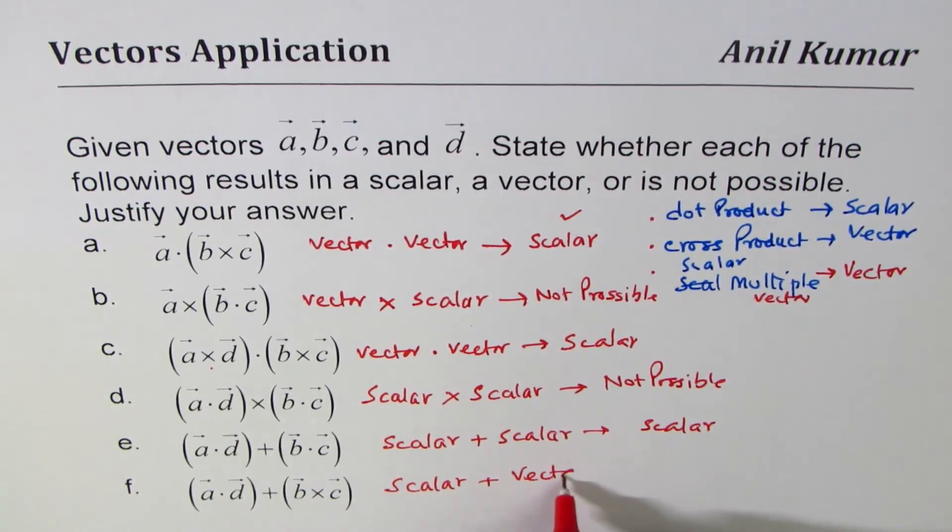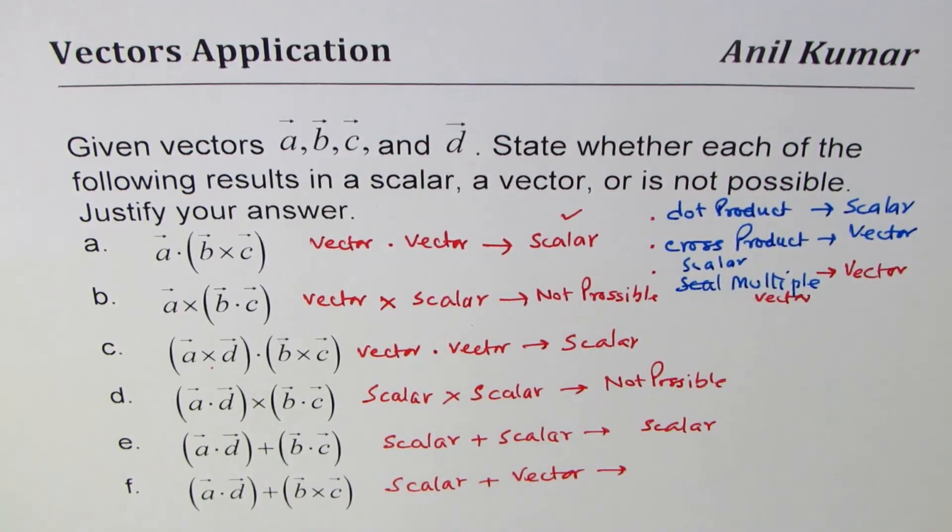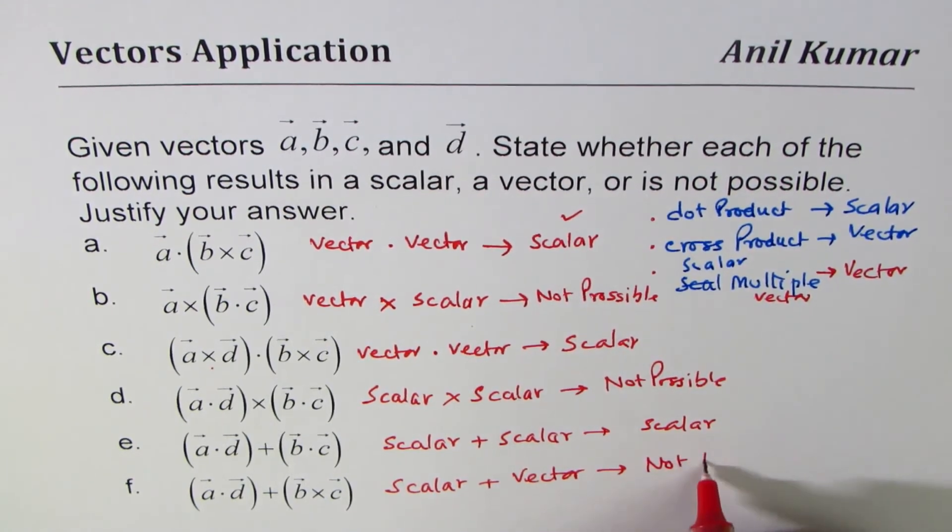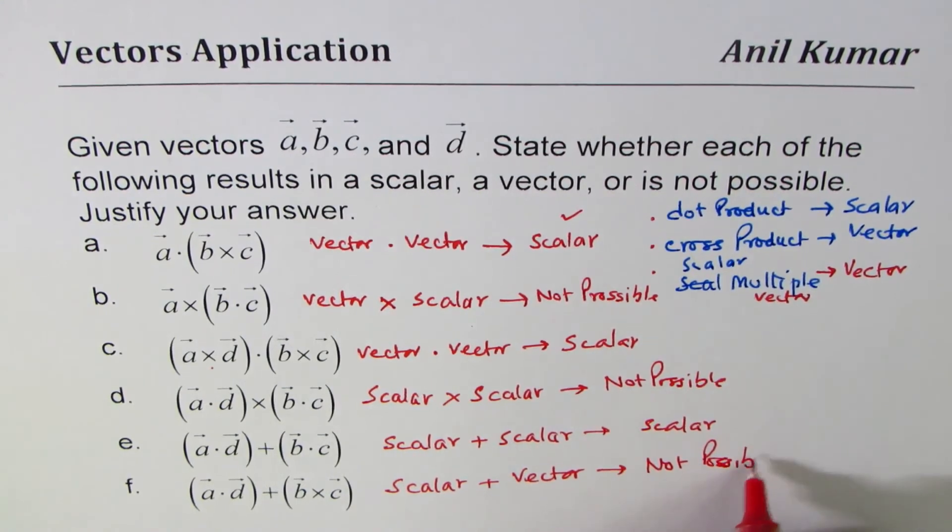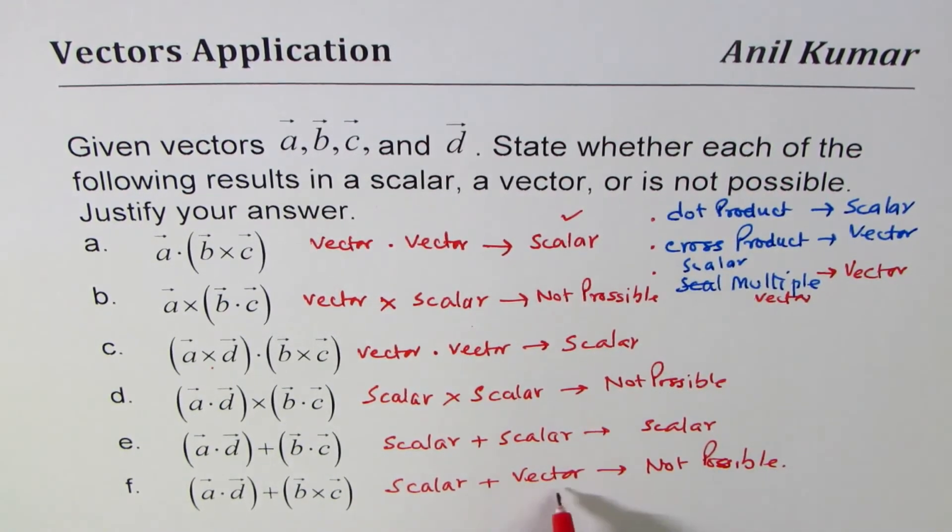...a vector. Now can you do scalar + vector? 5 + a vector? That is not possible. So in vector addition we need to add two vectors, we cannot add a vector to a scalar. Do you understand that part? It's kind of critical to understand.